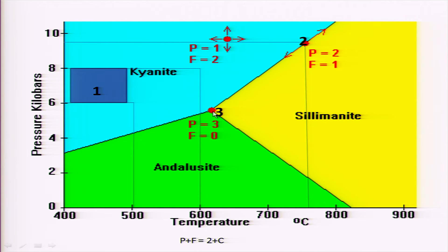The third situation is represented by point 3, where all three colored phases — kyanite, sillimanite, and andalusite — are present, so P = 3. Can we change any variable, pressure or temperature, so that the system does not change? No — if we change either variable, the system will get disturbed or changed. Therefore there is no degree of freedom: F = 0. Examining the same equation: 3 phases + 0 degree of freedom = 3, and 2 + 1 component = 3. The relationship holds there too.